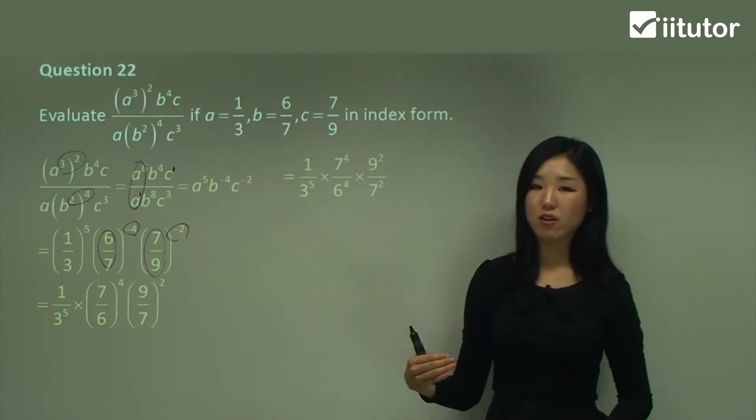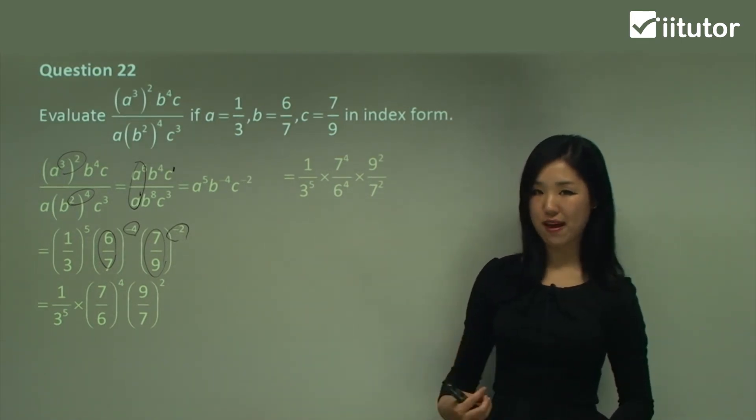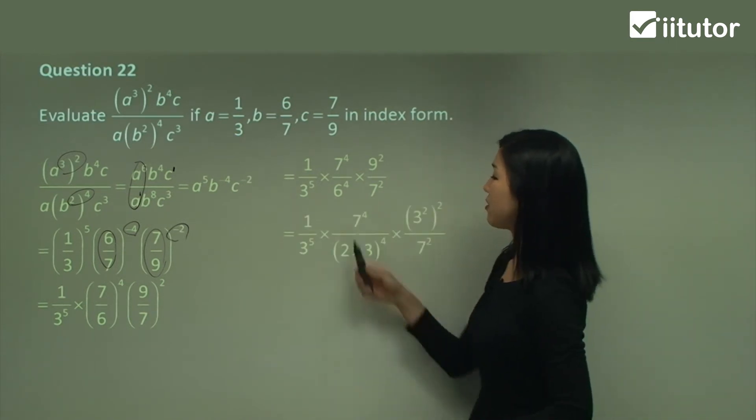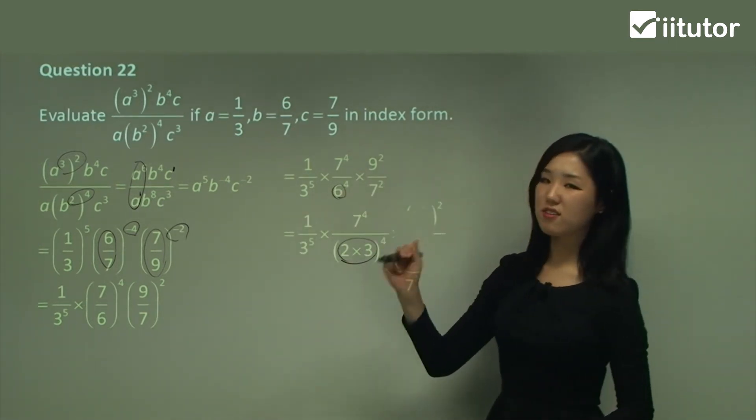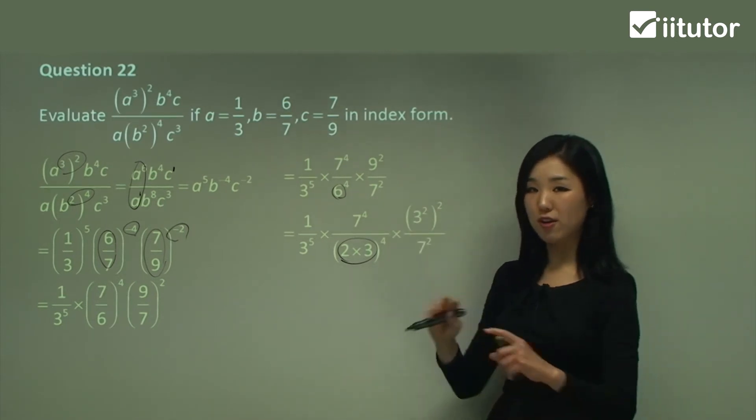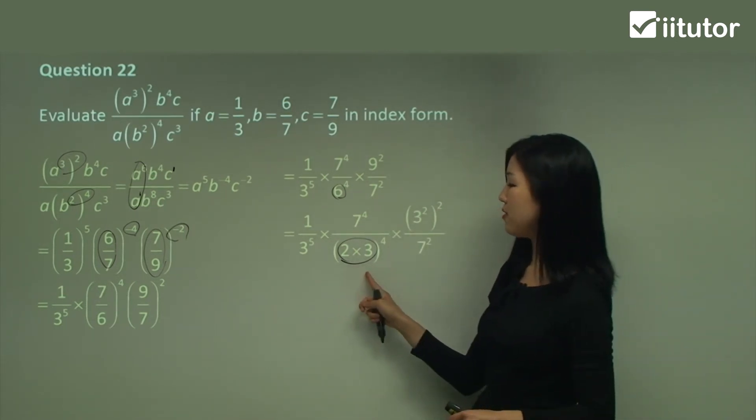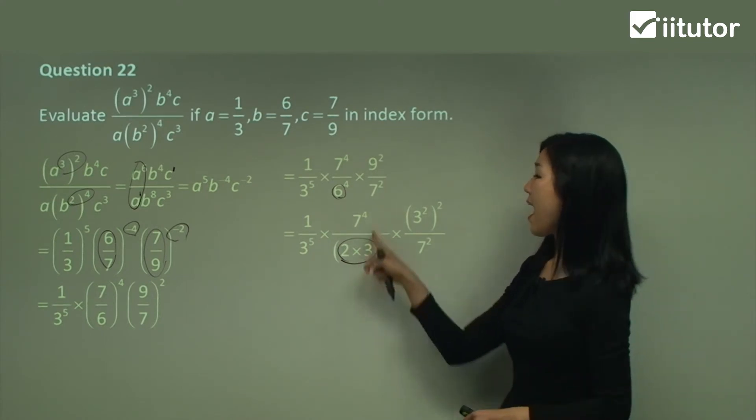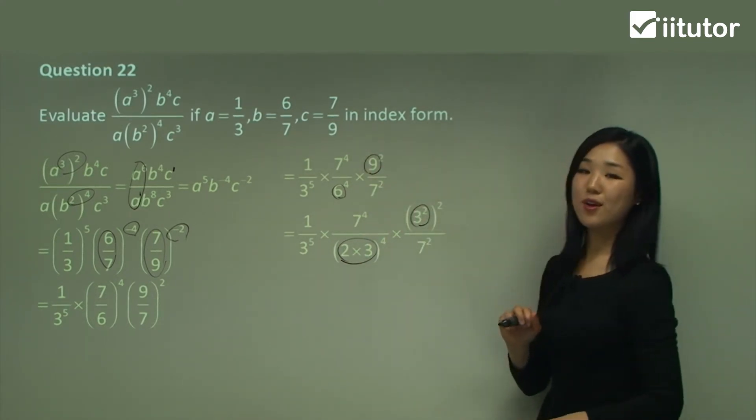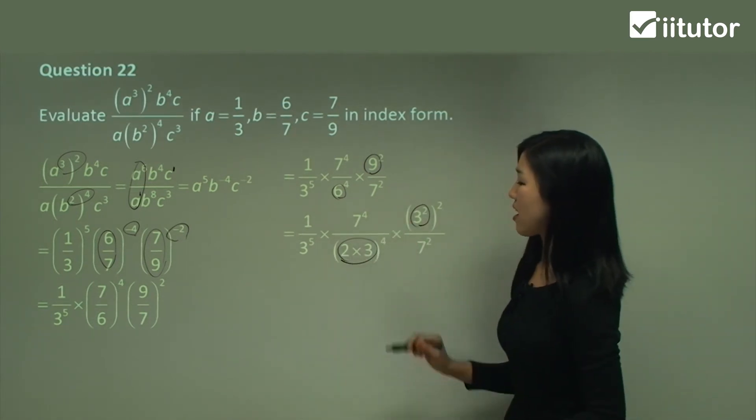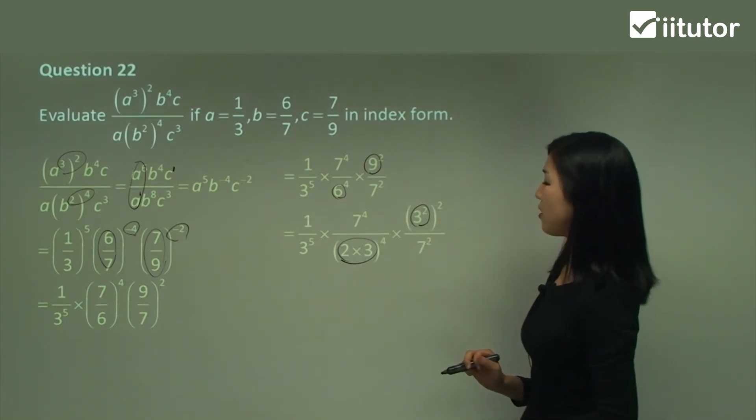Now I want to change everything down, break it all down into prime factors. So 6, I can change it as 2 times 3. 6 is not really a power of anything, so I'm changing it as like a multiplication of 2 numbers, 2 prime numbers. And 9 is simply 3 squared. And there's no more I can break down because they're all prime factors. So that's all we can do.